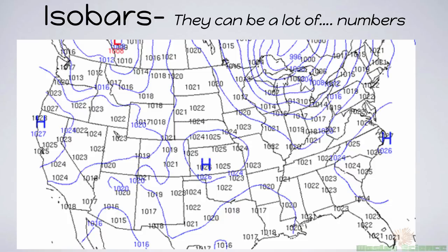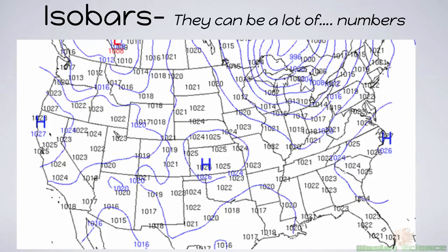Isobars can look like a lot of numbers at first, but take a step back. See this H? That's a high pressure system — the numbers are decreasing as you move away from it, and the isobars are not very close together. Similarly for the other high pressure system. Above it, there's definitely a low pressure system — the numbers are increasing and the isobars are close together. When you look at it and take a step back without focusing on every single number, you really start to see how weather works.